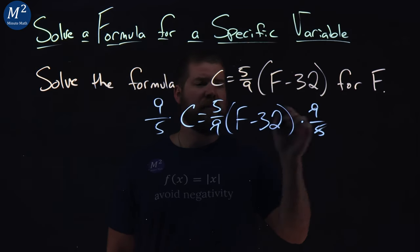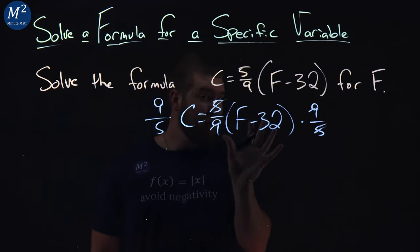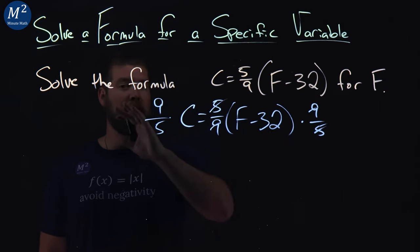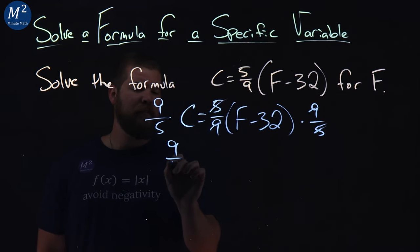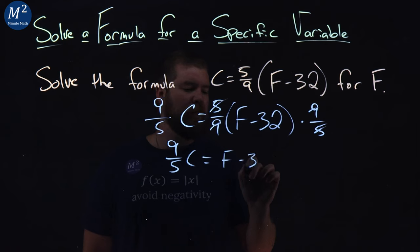What does this do? Well, the 9s cancel here and the 5 cancels there. Good goal there, got the fraction, move it over to the left-hand side, and we just have 9 fifths C equals F minus 32.